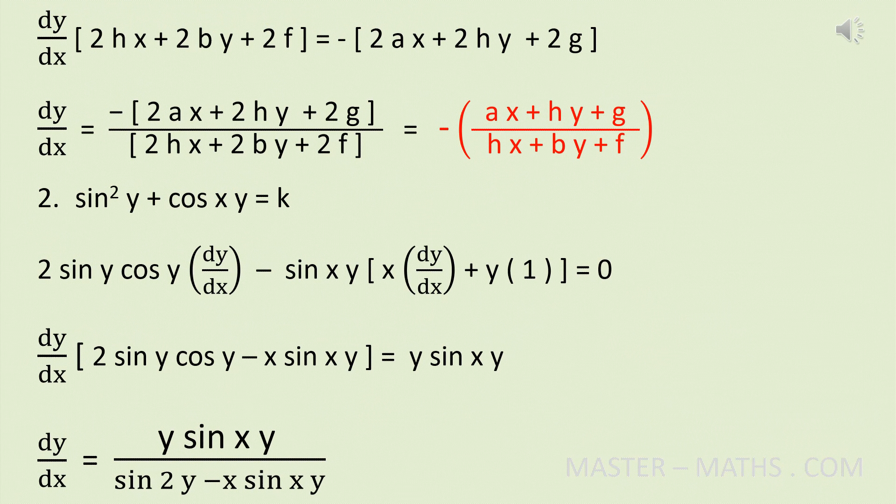Take dy by dx common from the terms which have dy by dx, and bring the remaining terms to the right hand side. You get dy by dx into (2hx plus 2by plus 2f) equals minus of (2ax plus 2hy plus 2g). On simplifying, dy by dx equals minus of (ax plus hy plus g) divided by (hx plus by plus f). Hope you are clear.